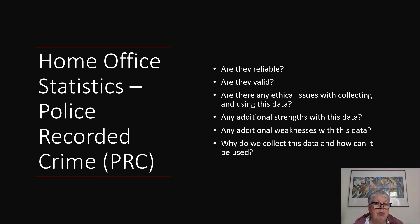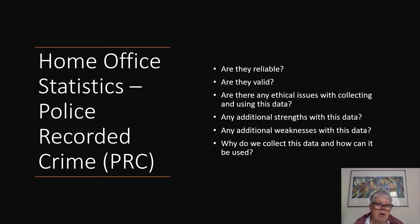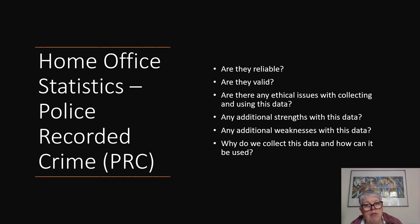You also need to discuss additional strengths and weaknesses. For example, these crime statistics have been collected for many years, so year upon year you might be able to see if there has been a rise in a certain type of crime or a reduction, and link that to a social policy. For example, if there has been a real crackdown on knife crime, you might expect the number of knives being retrieved to have gone up, but hopefully the number of stabbings to have gone down.